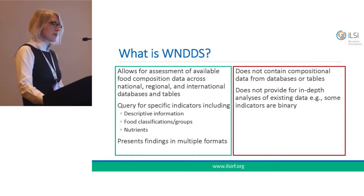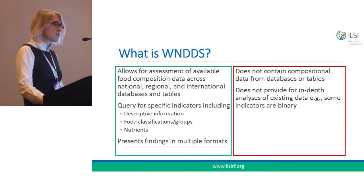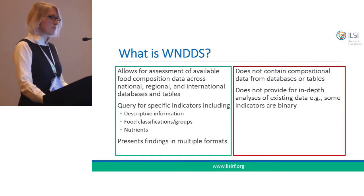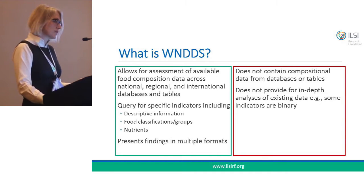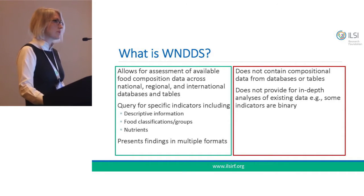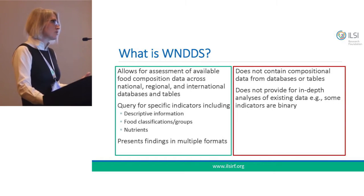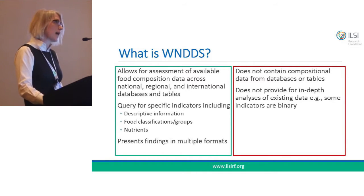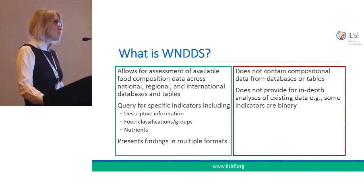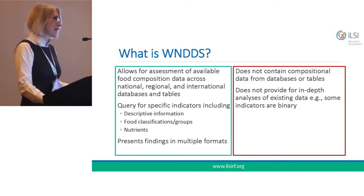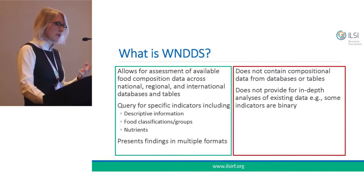WINS is an informational resource — think of it as a catalog or a library. It allows for the assessment of available food composition data across national, regional, and international databases and tables. You can query this resource for specific indicators including descriptive information, food classifications, groups, and nutrients. It presents findings in multiple formats, though not as many as we would like, due to the STAT plan software platform we used, which was inexpensive given our limited resources.